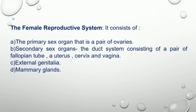Now let us discuss the female reproductive system in detail. The female reproductive system consists of the primary sex organ, i.e., a pair of ovaries; secondary sex organs including the duct system consisting of a pair of fallopian tubes, a uterus, cervix, and vagina; external genitalia; and mammary glands.